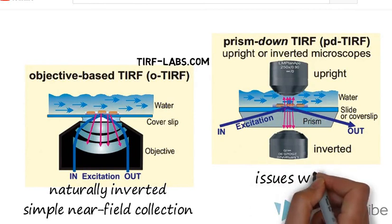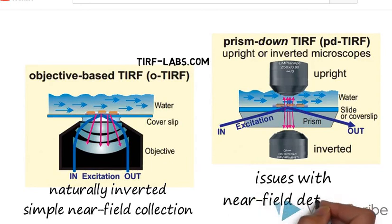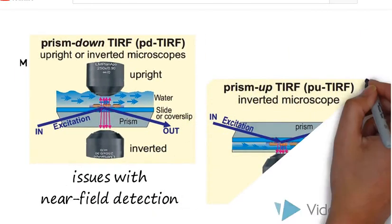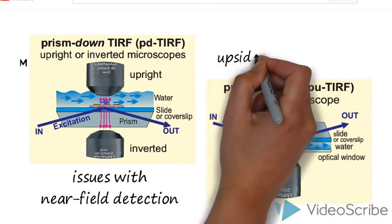Alternatively, if you want to put the objective below the system, the prism is in the way. This is going to limit near-field collection. The whole P-TIRF setup can be inverted, but when this is done, some limitations to sample preparation ensue because the sample holder is now upside down.